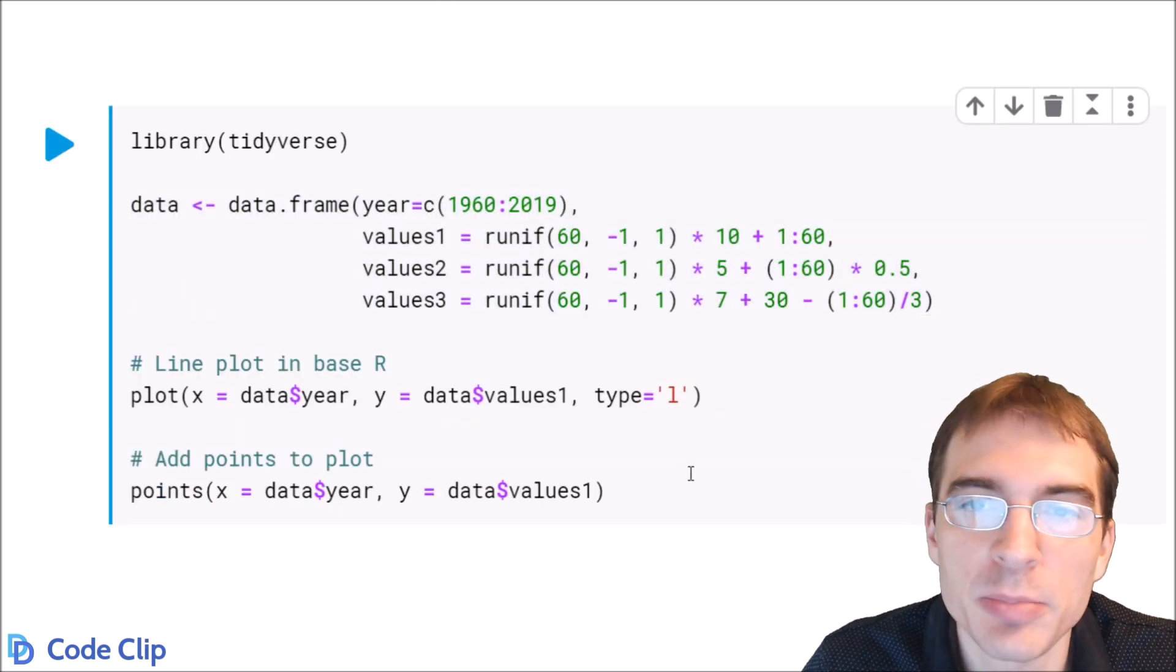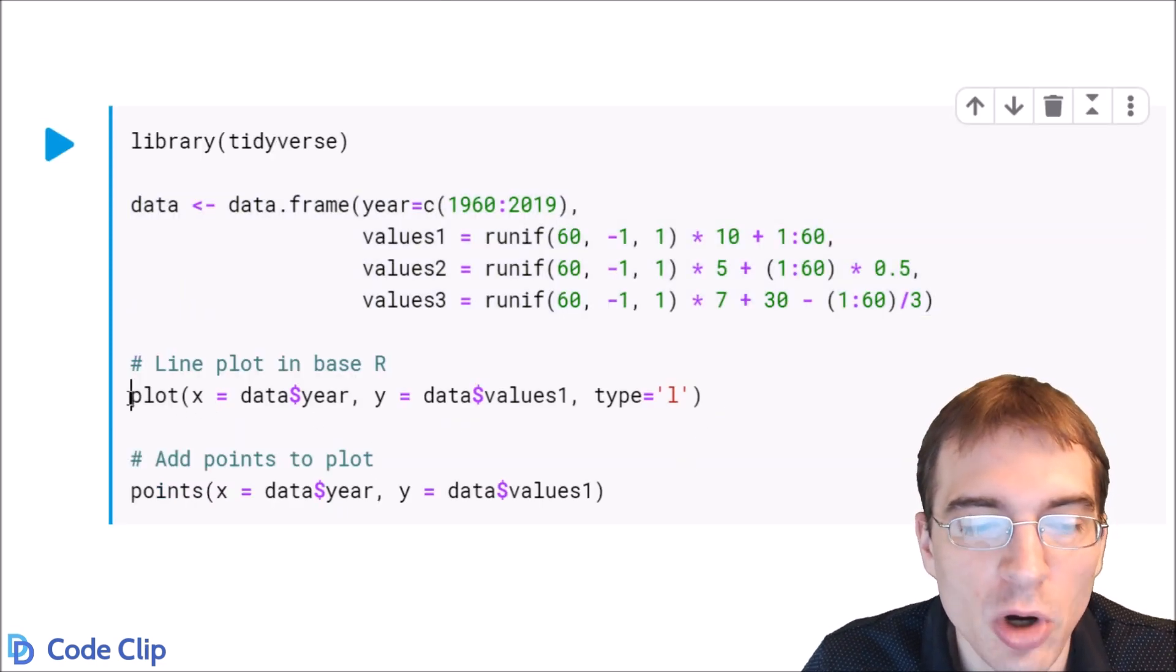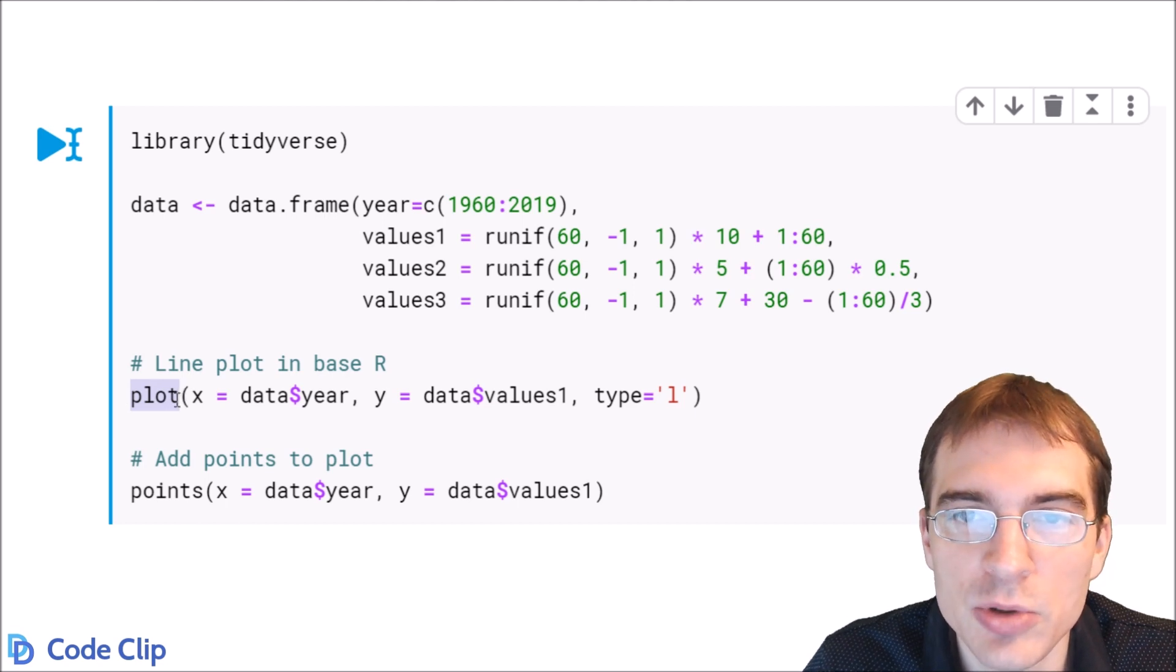Now to make a line plot in base R you can just use the normal plot function, the same one you would use for a scatter plot.